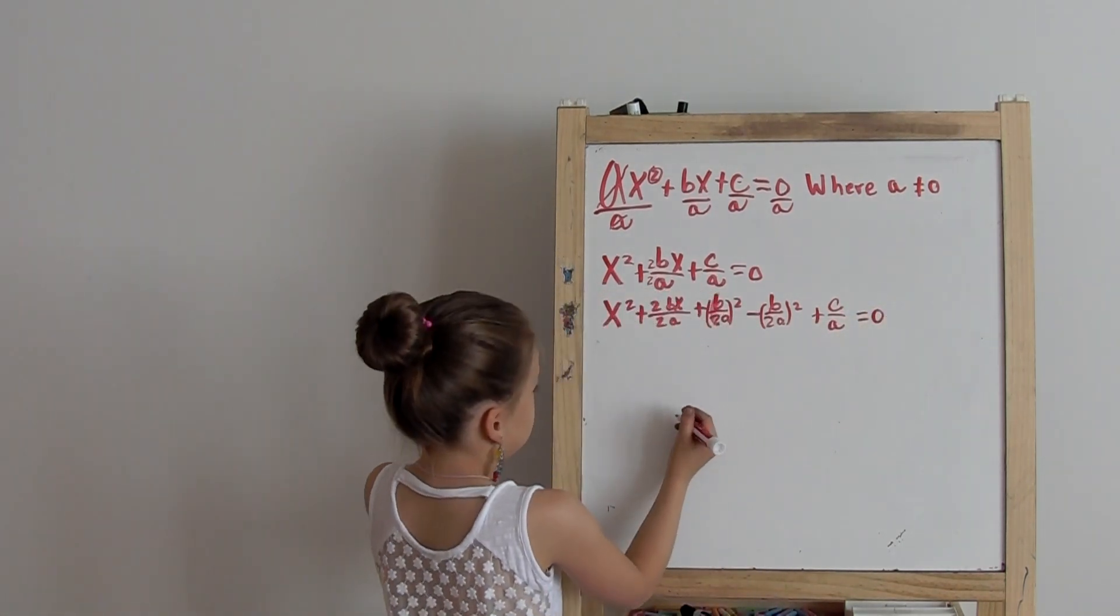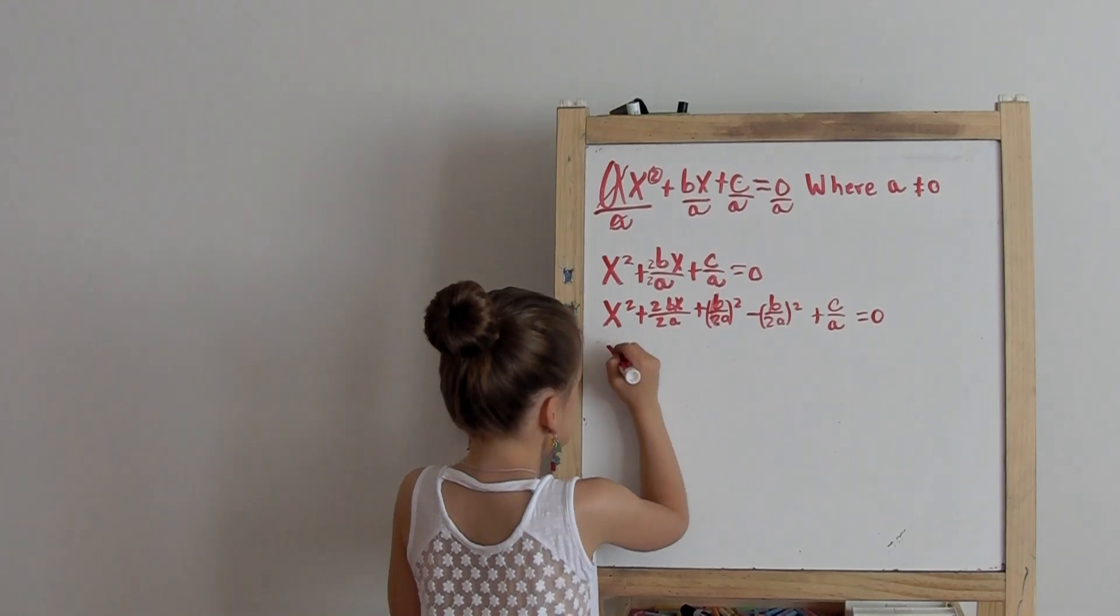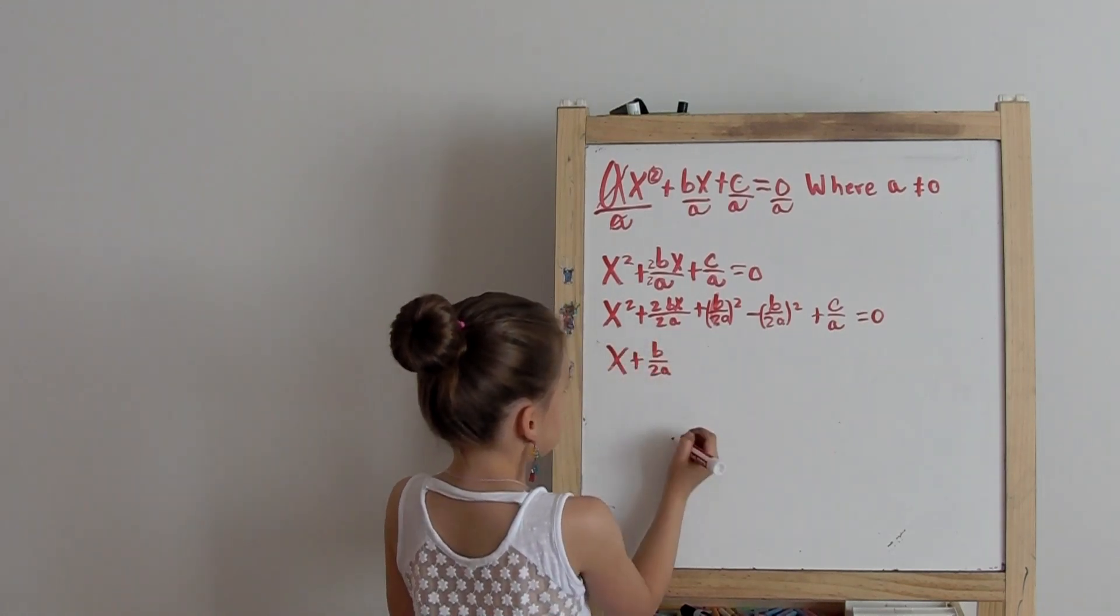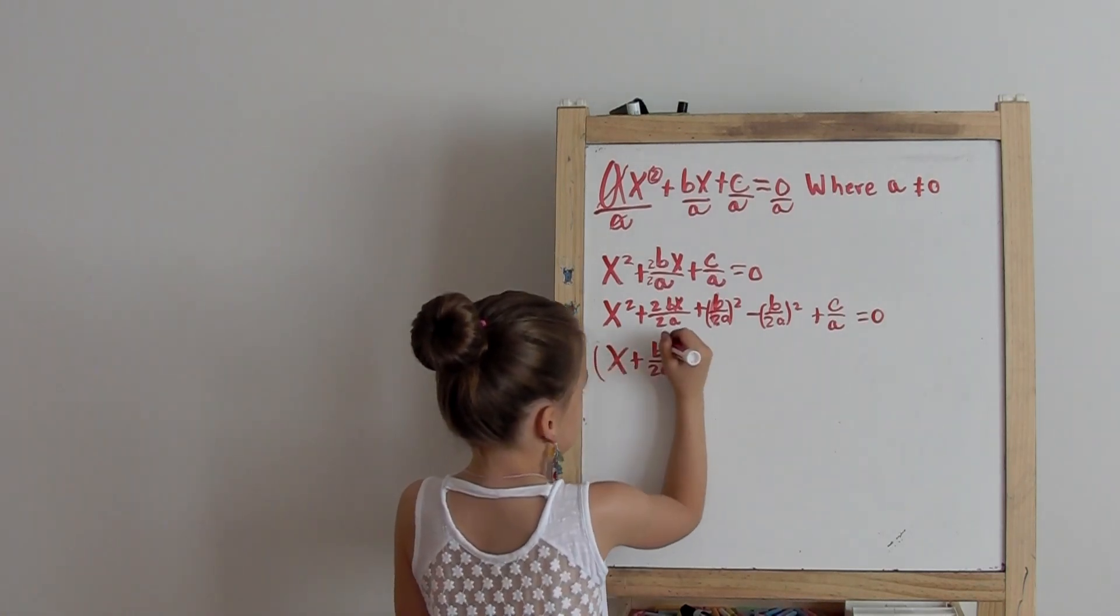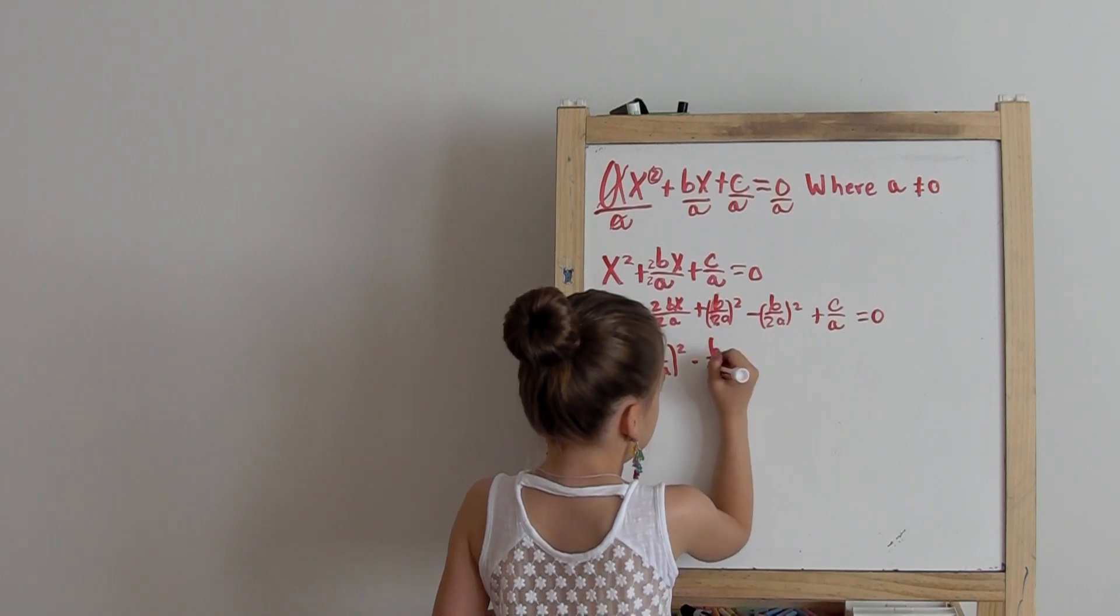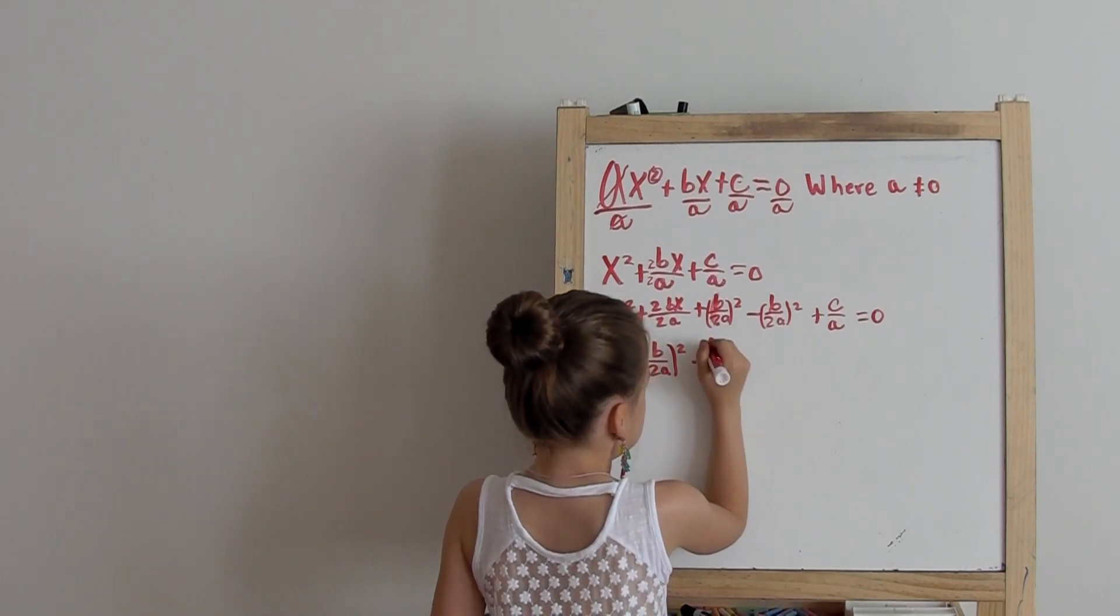So now we have x plus b over 2a squared minus b over 2a squared.